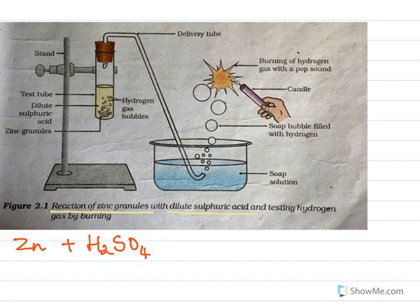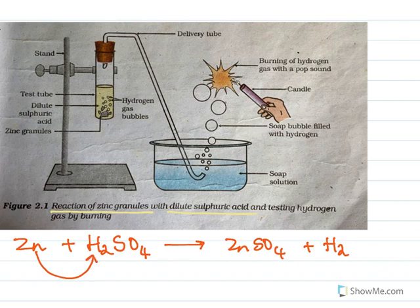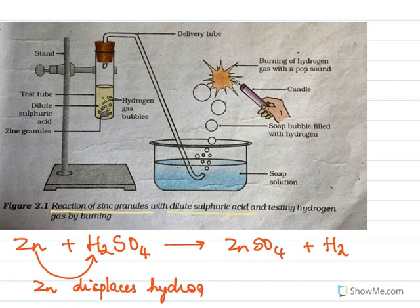So we have zinc plus sulfuric acid, a metal with an acid. We know we will get zinc sulfate plus hydrogen because what actually happens is zinc displaces hydrogen. Zinc displaces hydrogen from the acid and gives us hydrogen gas.